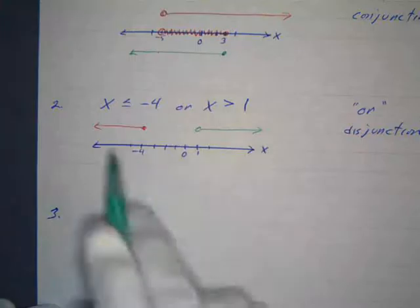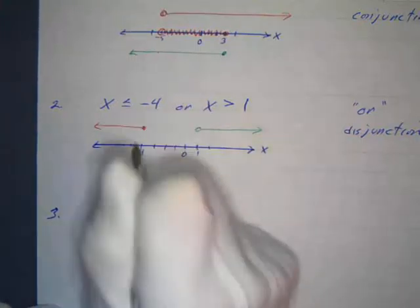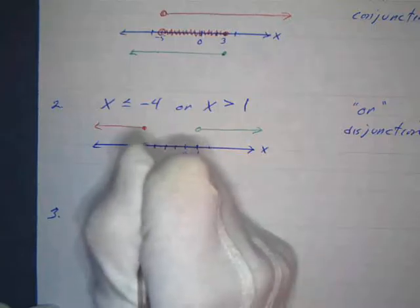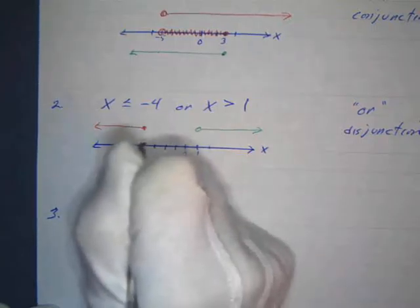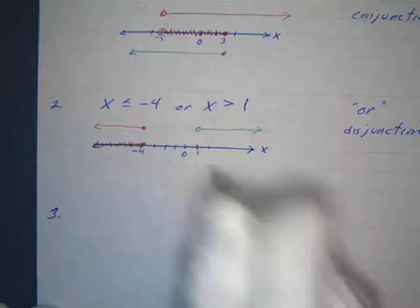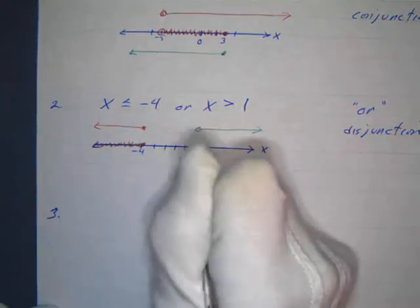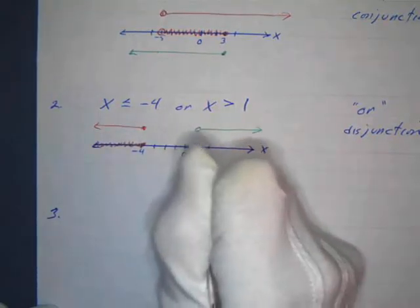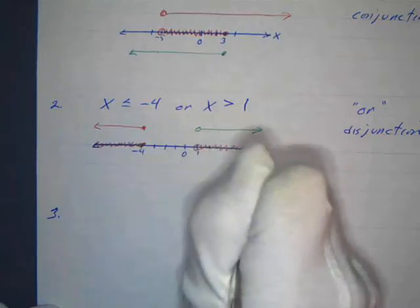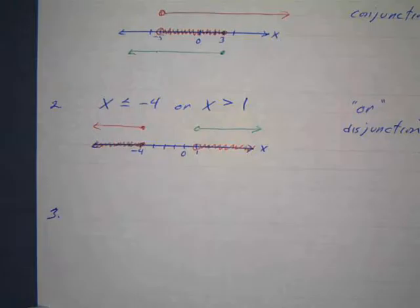The second condition is x greater than one — not equal to one — so we place an open circle at one and shade to the right. For a disjunction, we shade where we have red or green or both: to the left of and including negative four, and to the right of one (not including one). That's the solution set.